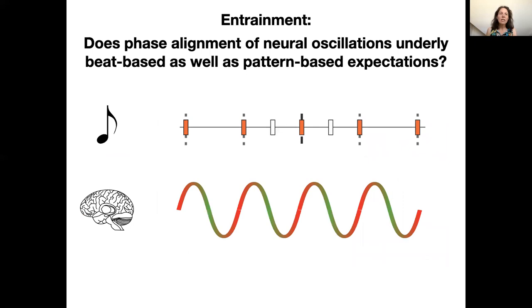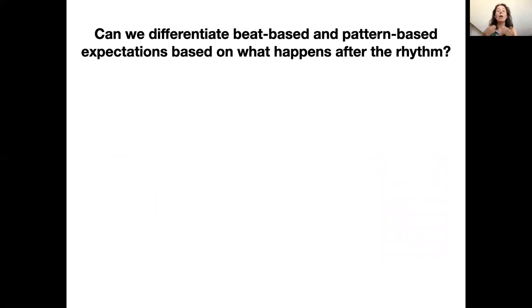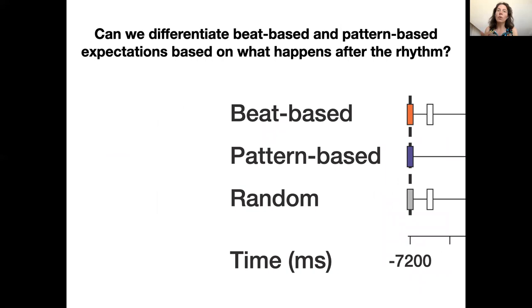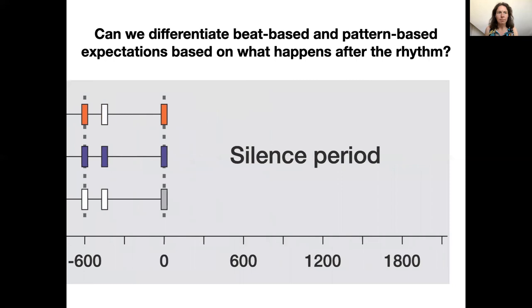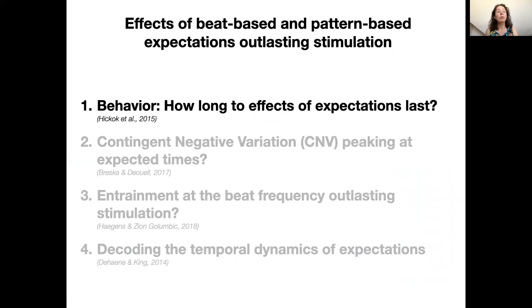It's unclear whether temporal expectations based on regular beats and predictable patterns depend on similar mechanisms in the brain. Here specifically, we aim to assess whether entrainment may underlie beat-based as well as pattern-based expectations. Theories of entrainment predict effects of these expectations outlasting the physical stimulation, and therefore we looked at effects of temporal expectations after a rhythm stops. We played participants sequences containing beat-based or pattern-based structure or neither, the random rhythms, and these sequences were followed by a silence period. We looked at several different markers of temporal expectations in the silence period.